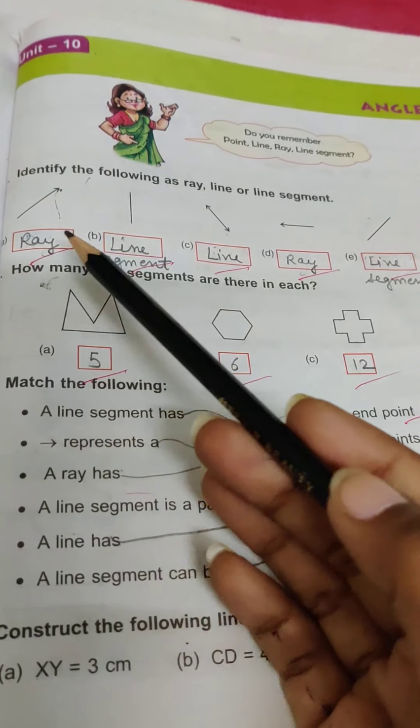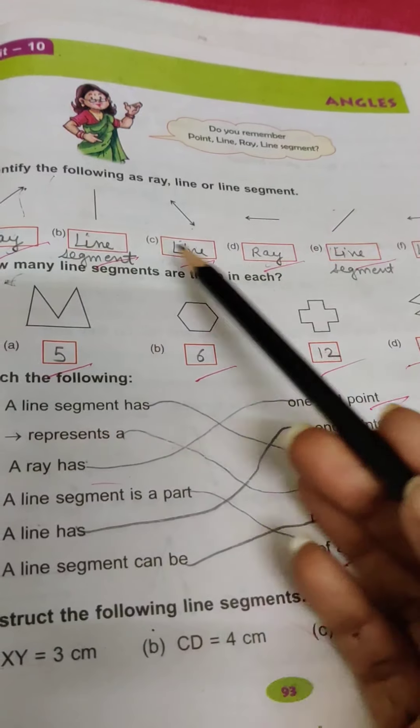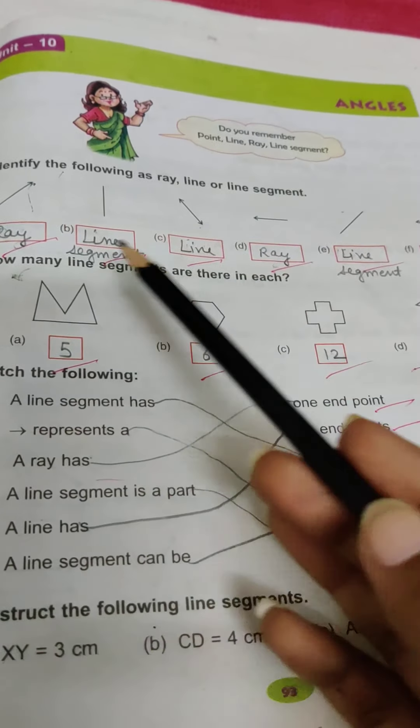Identify the following. I have to identify the shapes. You can identify clearly which is ray, which is line, or which is line segment.